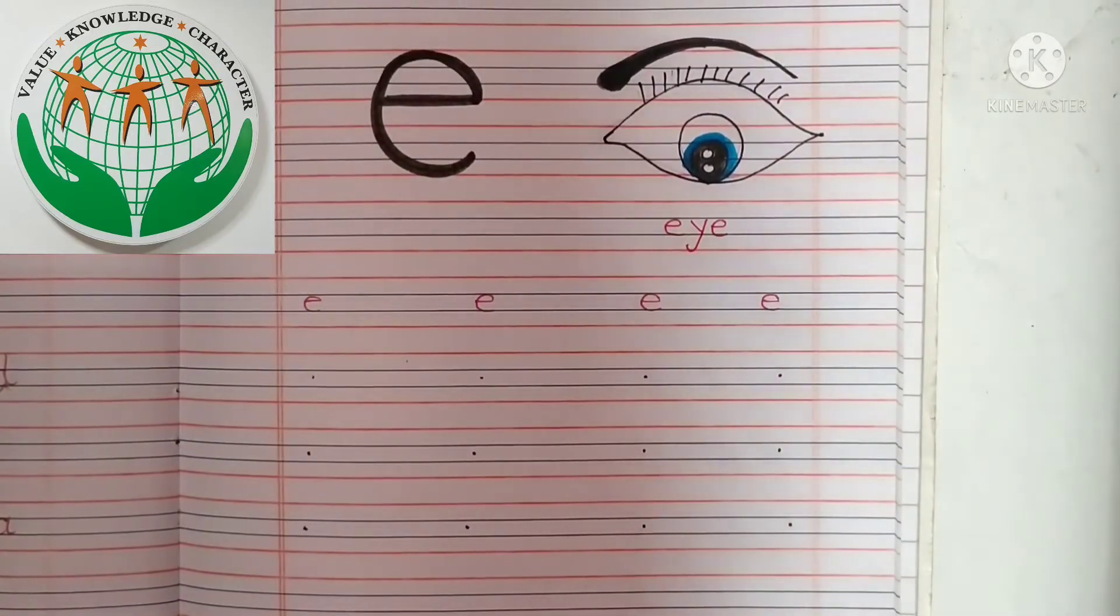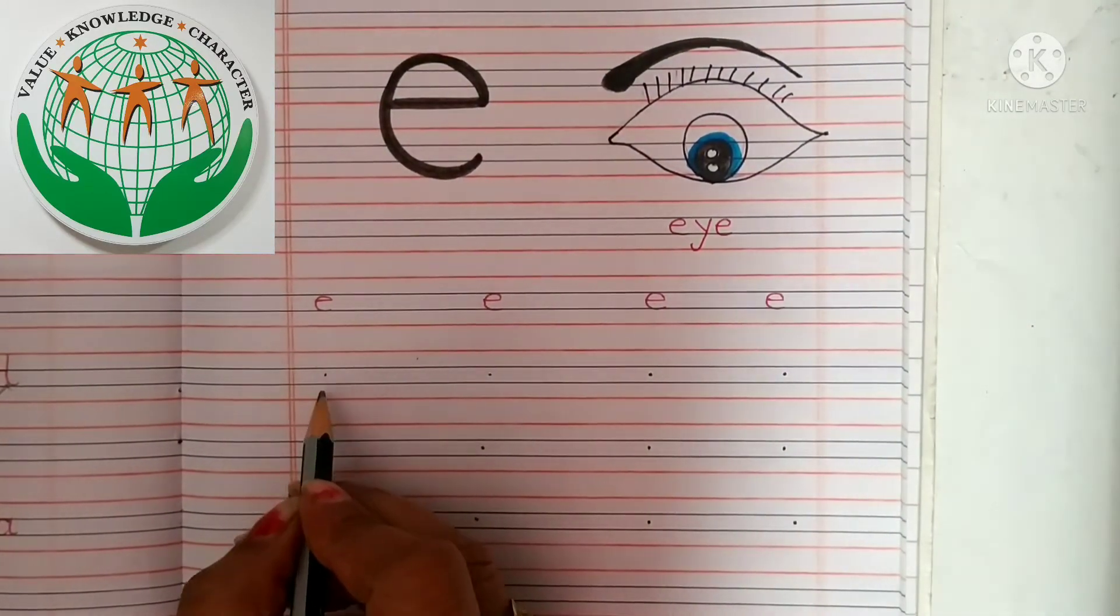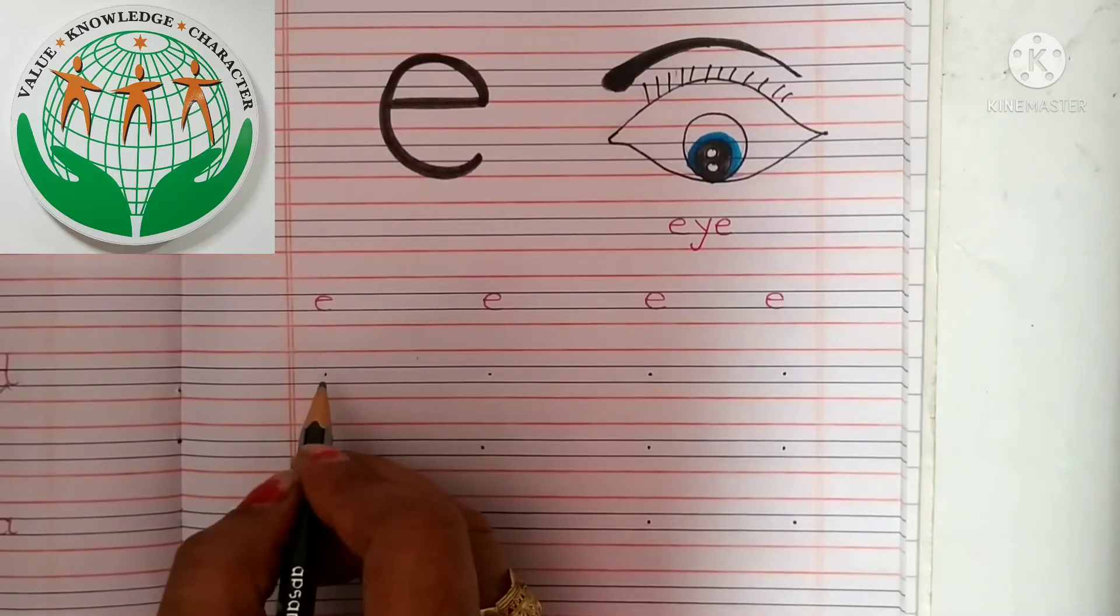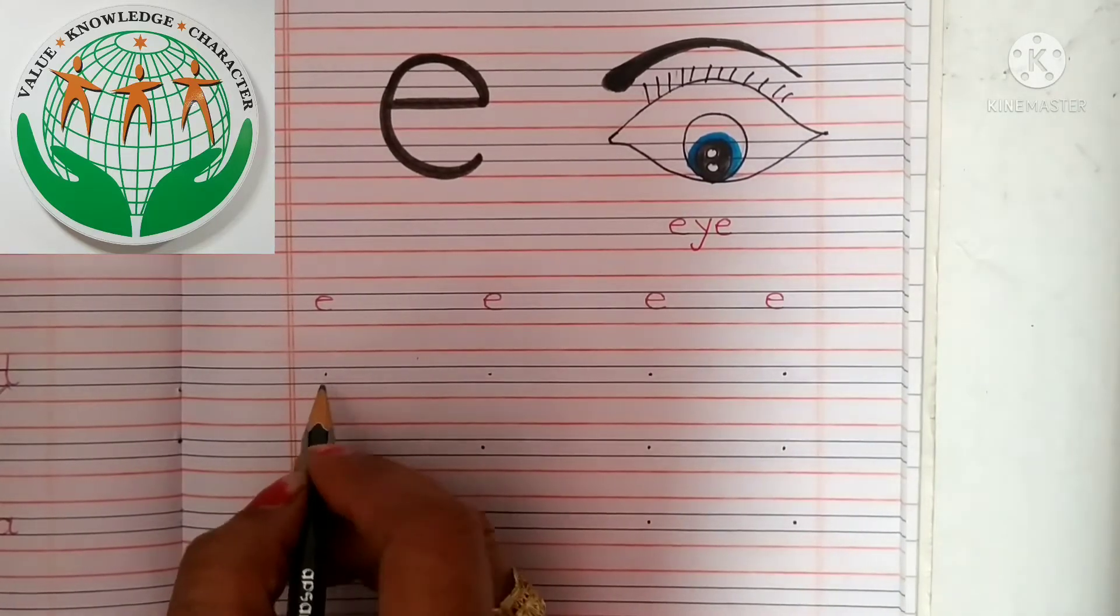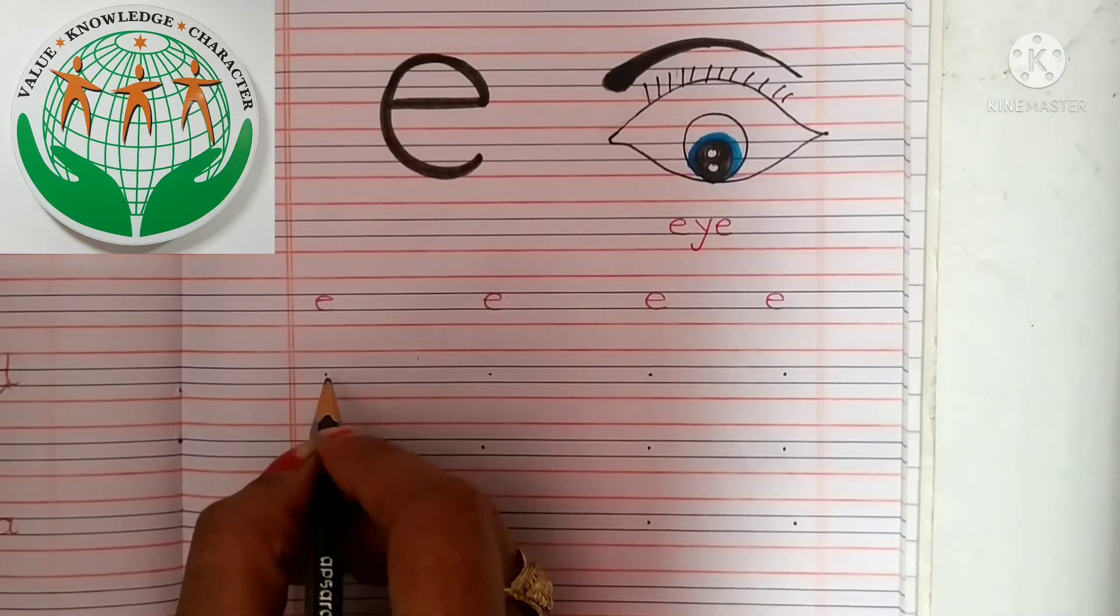So take your pencil. Look here kids, maam ne kya ki hai? Maam ne aaj kisi bhi line pe dot nahi put ki hai. Maam ne joh middle ki black line hai, unki mid me dot put ki hai. Toh haam kaha se shurru karengi? Haam mid se shurru karengi.